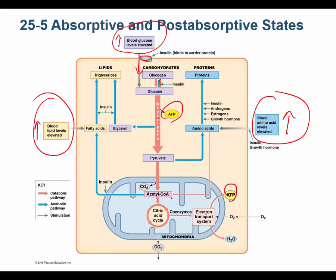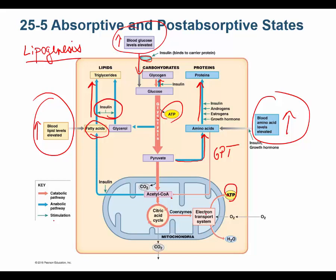Following the blue arrows: glucose can be converted to glycogen. Excess pyruvate can be converted to amino acids — glutamic pyruvic transaminase takes the amino group from glutamate and sticks it on pyruvate — and those amino acids can be used to make proteins. Absorbed lipids can be made into triglycerides and stored. Insulin stimulates lipogenesis and insulin stimulates protein synthesis.